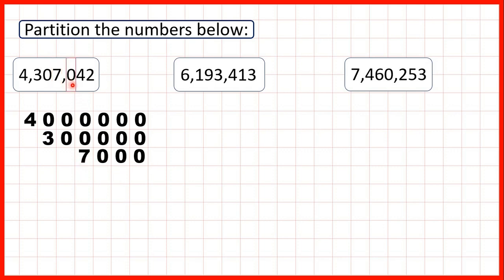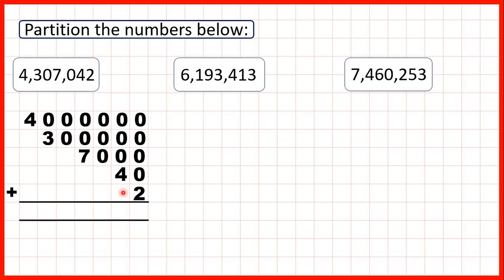In our hundreds we have a zero again, so we don't need to partition that because the value of zero is always zero. Our next digit is a 4 in our tens, so that stands for 40, and then we have a 2 as our ones digit. When we partition numbers, we can add up our partitioned numbers and we'll get the number we started with — that tells us we've partitioned accurately and haven't made any mistakes.